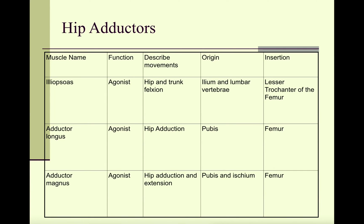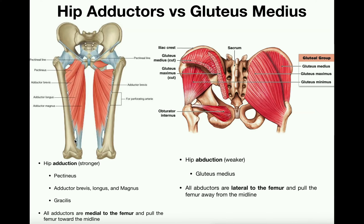Looking at the adductor longus and adductor magnus, they generally have their origin on the pelvis at the pubis specifically, with some variation — the large adductor magnus also has an origin at the ischium. All of the adductors have their insertion on the femur, at different locations: some more proximal like the pectineus, and some inserting farther down like the magnus. Combined, each one of these muscles moves the femur toward the midline, or moves both thighs closer together.